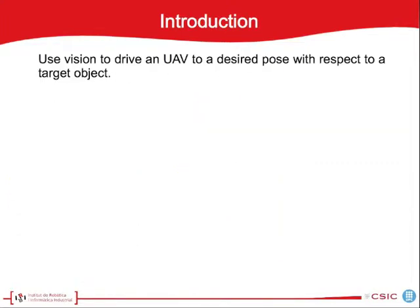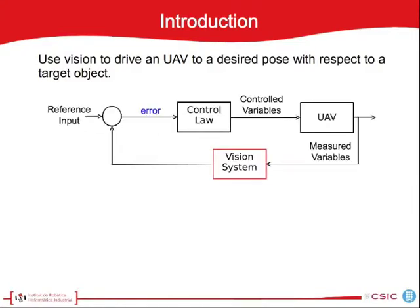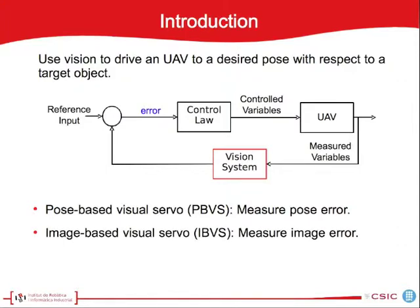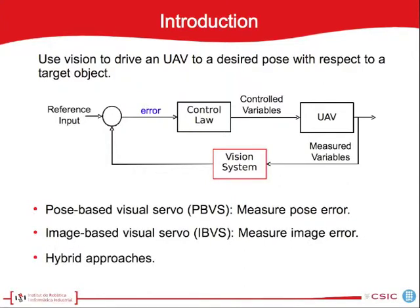In our case, we use vision to drive a UAV to a desired pose with respect to a target object. Looking at the control loop scheme, the error is computed using the vision system feedback. Depending on how this error is computed, we can classify visual servoing into three main groups: pose-based, which computes the error considering poses but without ensuring the object remains in the camera field of view; image-based, which computes the error using image plane information without ensuring feasible poses; and hybrid approaches that combine both methods.